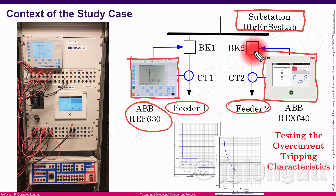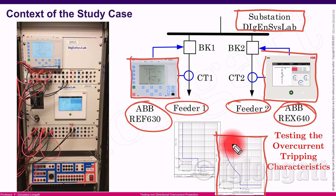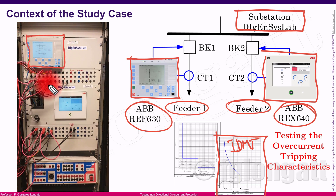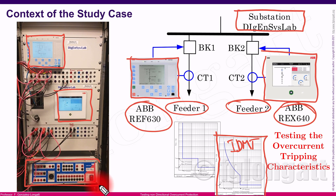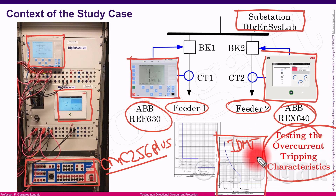The REF640 is a monster relay with many more functionalities, but in this case we are using it for feeder protection. The plan is to test the overcurrent tripping characteristic using the IDMT. As you can see, this is the physical configuration inside my lab — the REF630, the REF640, and the CMC256+, which is the Omicron device we will be using for testing.